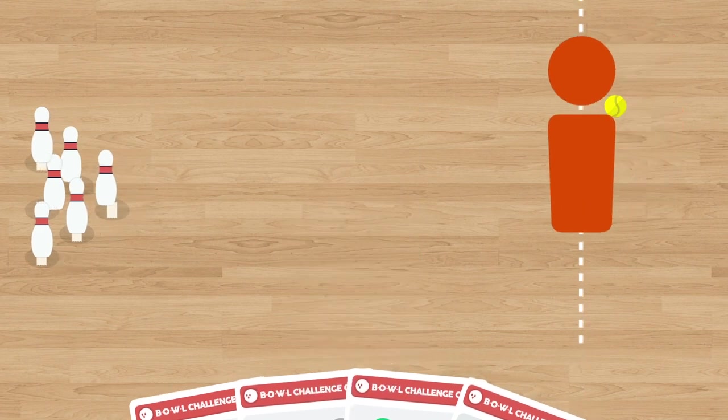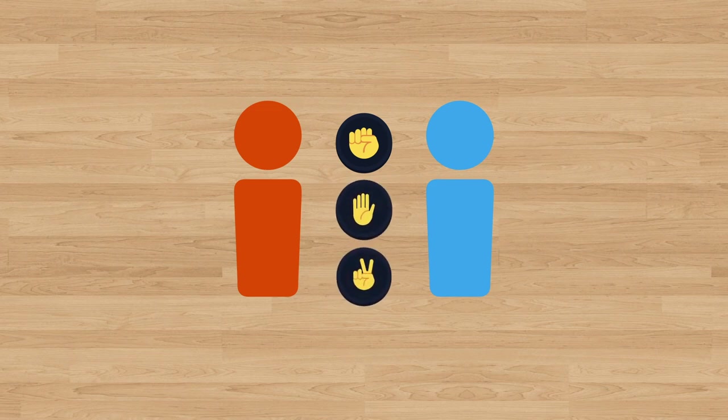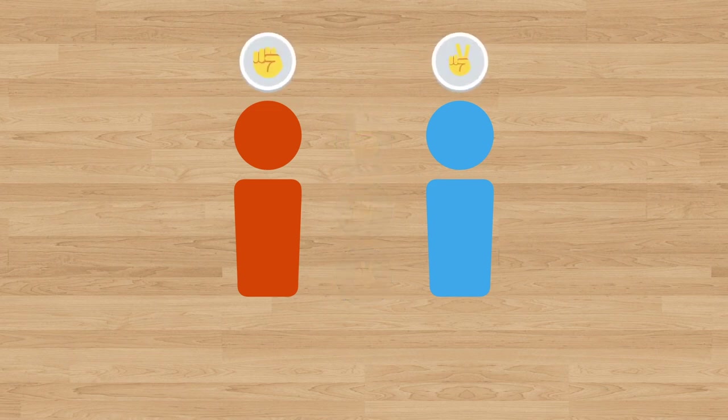To start the round, challenge your partner to a round of rock, paper, scissors. Whoever wins that will start off as the lead bowler.